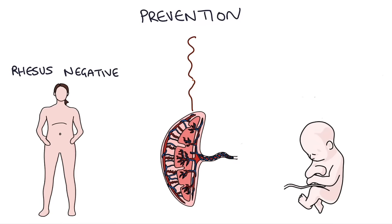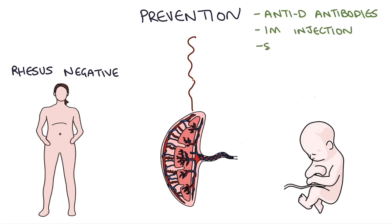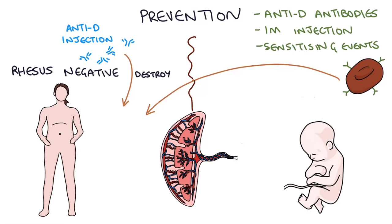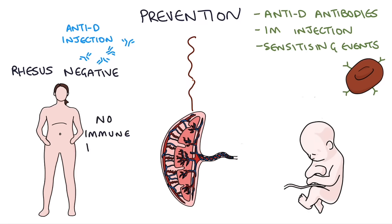So how do we prevent the mum from becoming sensitized? We use something called anti-D immunoglobulins — basically the anti-D antibodies — given by intramuscular injection at any event where the mum might become sensitized. This injection circulates in the blood and destroys any of the baby's blood cells containing the rhesus antigen before the mum has an opportunity to launch an immune response, preventing her from developing her own antibodies against the rhesus antigen.